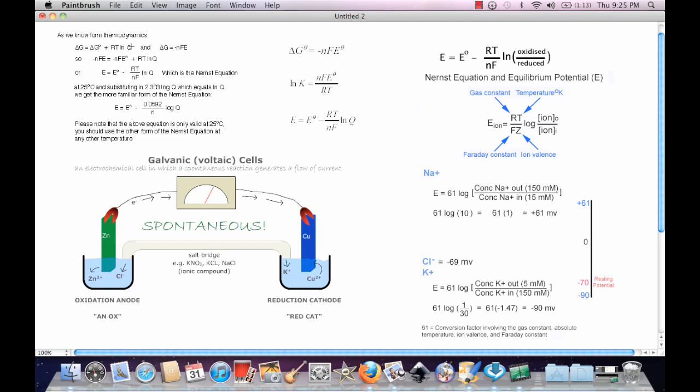So the Nernst equation is another way of finding out voltaic cell reductions. We know that the delta G, which is the Gibbs free energy, is equal to the delta G initial plus RT ln Q, where Q is the reaction quotient.